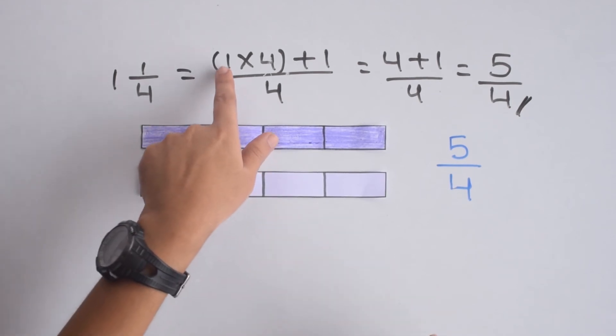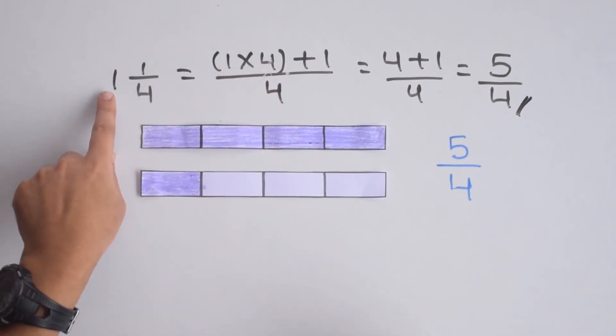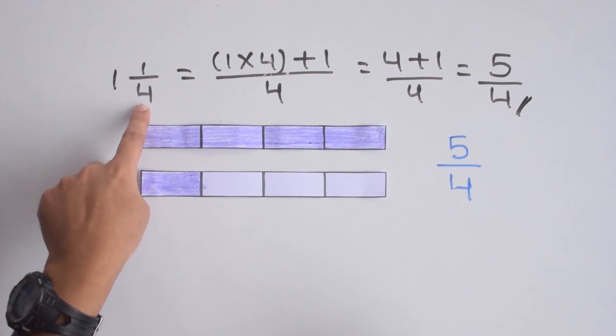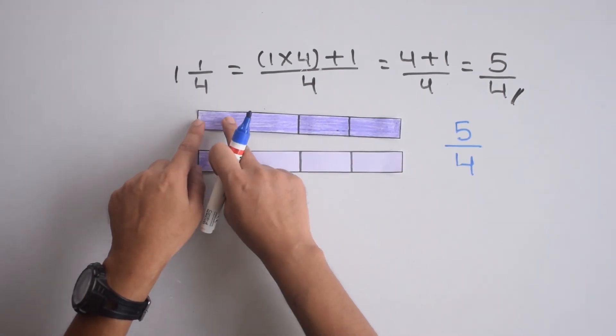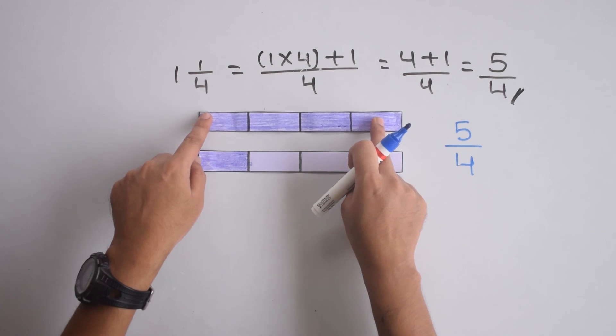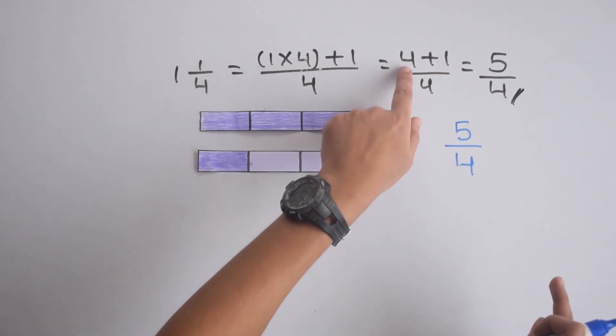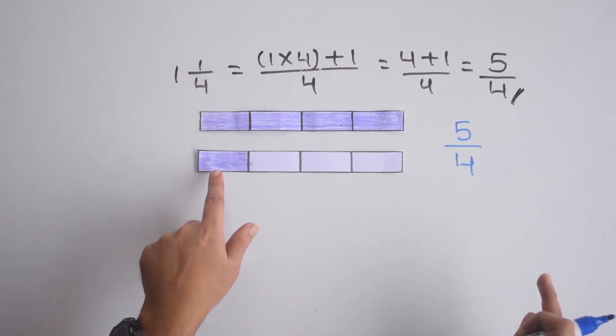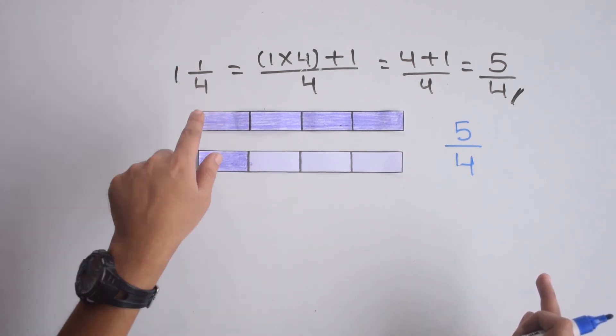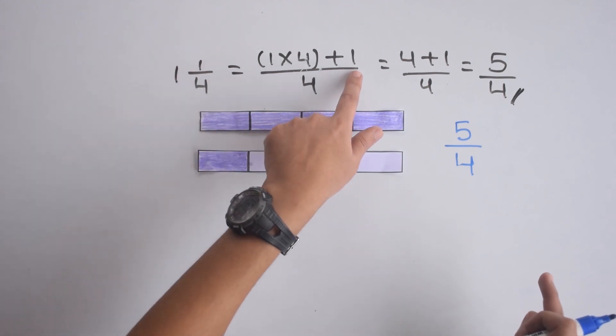Here, if you can see, this 1 × 4—where we multiply the whole number with the denominator—is finding how many individual parts are in the whole number. We get 4 here. And this +1 part represents the one colored part in the proper fraction.